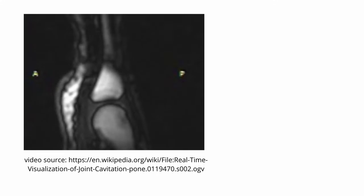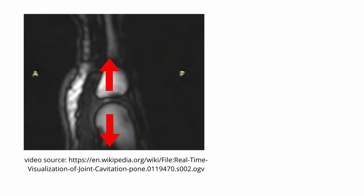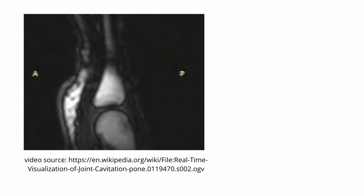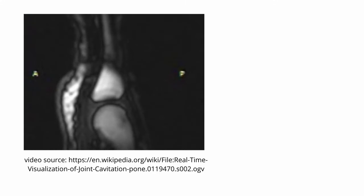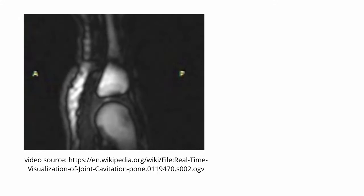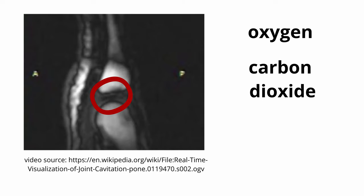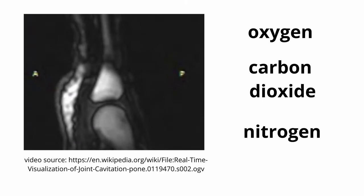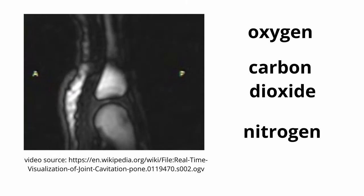When we crack the joint, the articular surfaces are separated rapidly, pressure within the joint cavity is reduced, and some of the gases that are dissolved in the synovial fluid make small bubbles. The content of this bubble is most probably oxygen, carbon dioxide, and nitrogen. These bubbles rapidly collapse upon themselves, implode, resulting in the clicking sound that we hear.